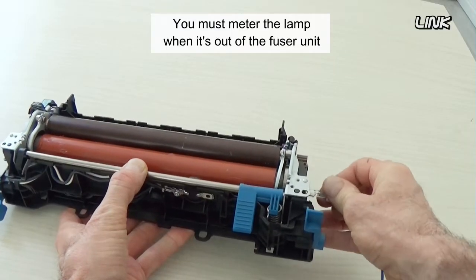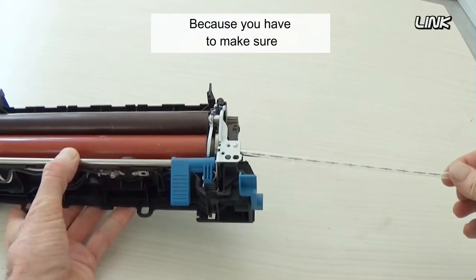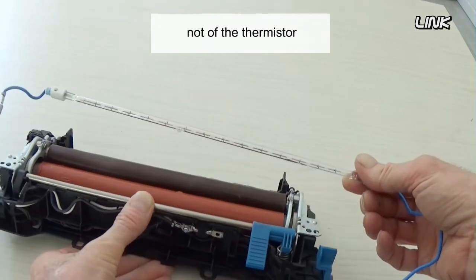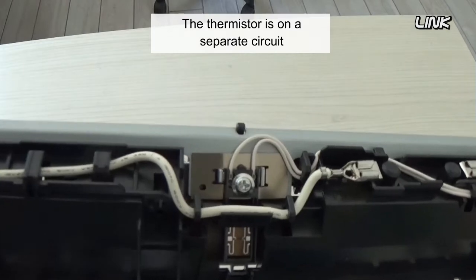You must meter the lamp when it's out of the fuser unit because you have to make sure you are only measuring the resistance of the lamp, not of the thermistor. The thermistor is on a separate circuit.